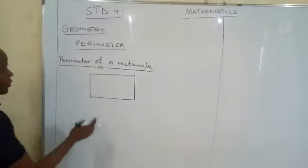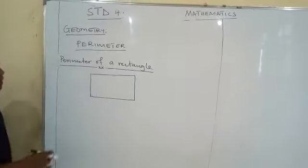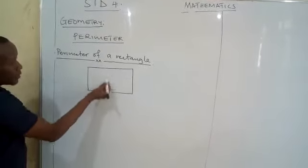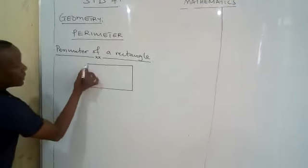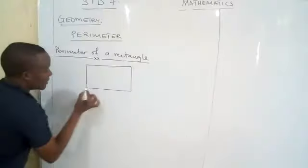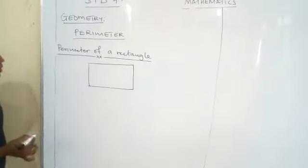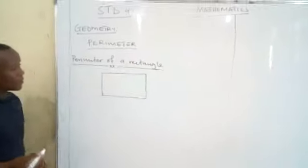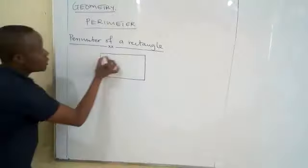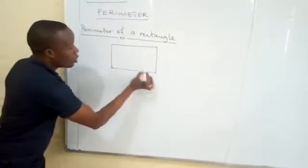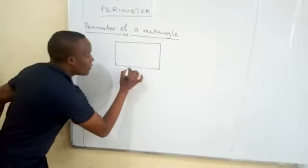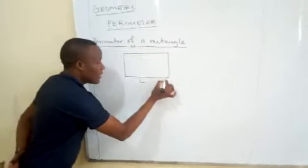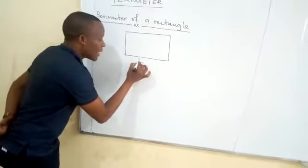A rectangle has two pairs of sides which are equal. This side and this side are equal, and also this side and this side are equal. The long parallel sides we call them length. We represent length by the letter L.